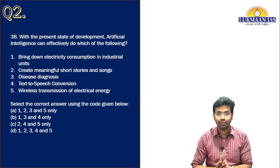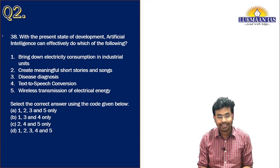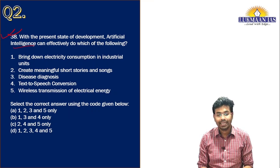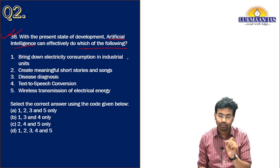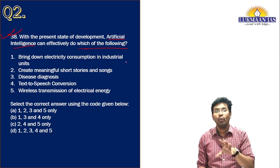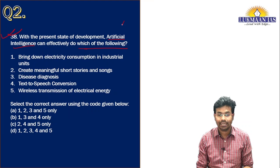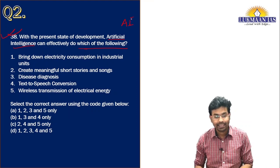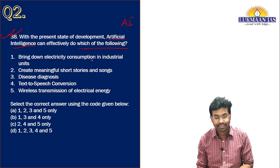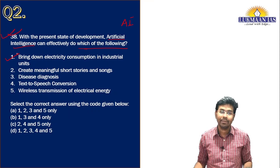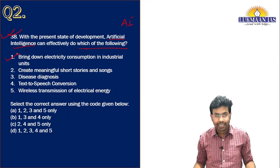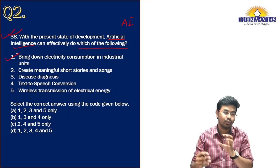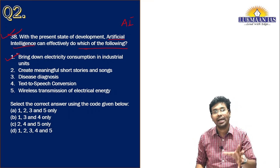Let us move to the next question, which is about artificial intelligence. With the present state of development, artificial intelligence can effectively do which of the following? They are asking about the applications of artificial intelligence, or AI. One application is bringing down electricity consumption in industrial units. Using AI, we can predict the future demand for electricity.